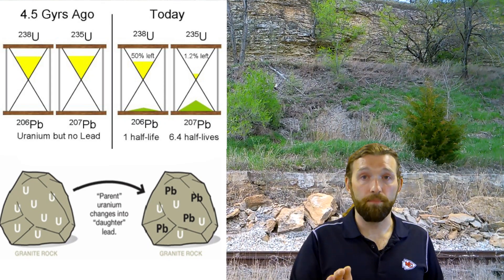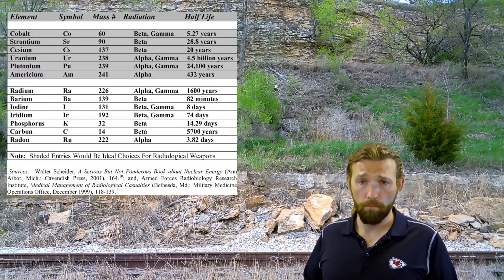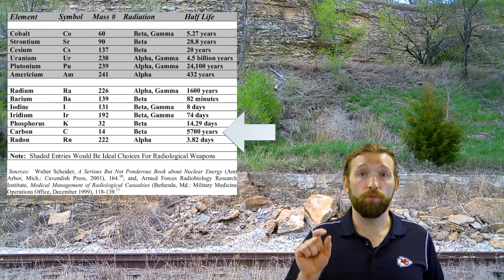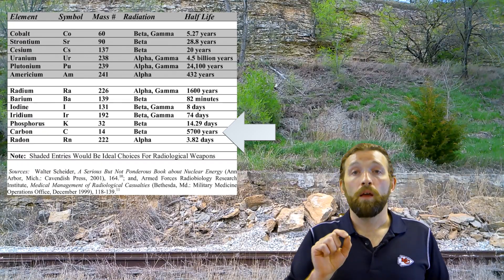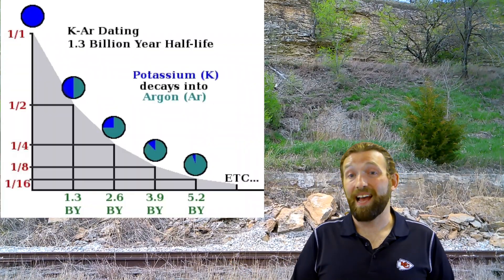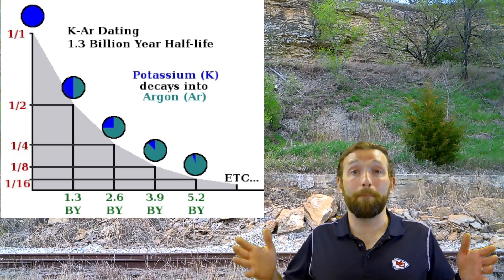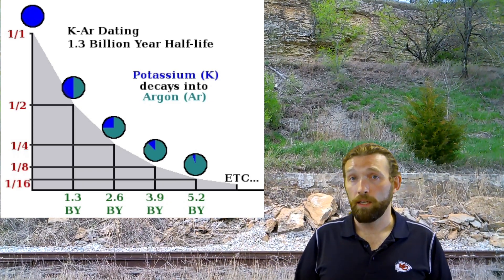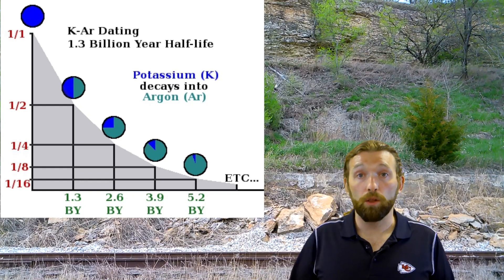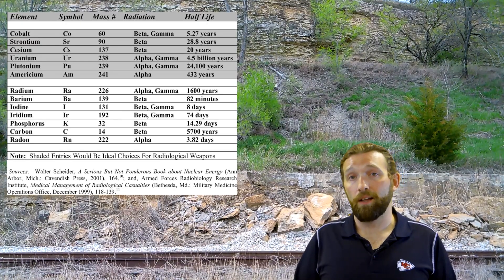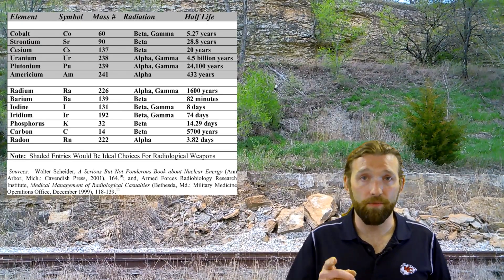Depending on the type of isotope you're using: carbon-14 is great if what you're dating is younger than 70,000 years — after that, there's not enough radioactive carbon left because of its half-life to figure anything out. But things like potassium-argon can be used for things as old as a billion years. The problem with potassium-argon is that argon is a gas, so if those rocks have been disturbed, you lose a lot of the argon, your ratio gets messed up, and you don't get an exact age. Everything has its problems, and each material is good for different time ranges.